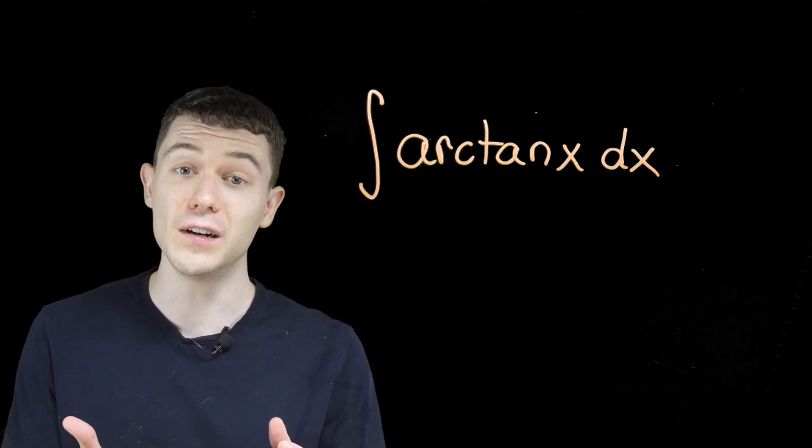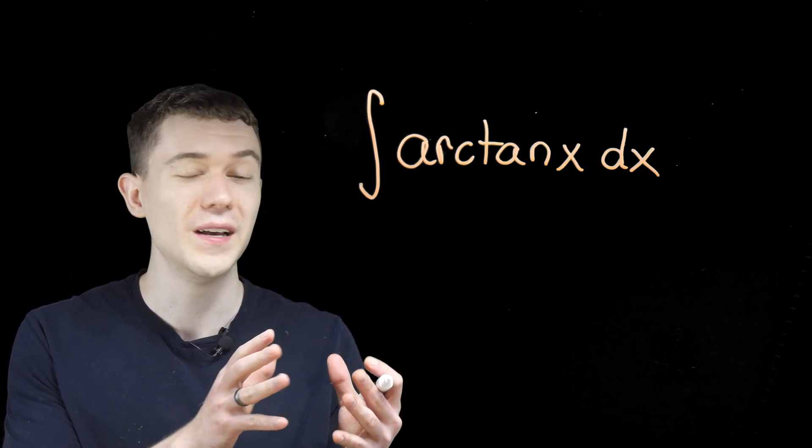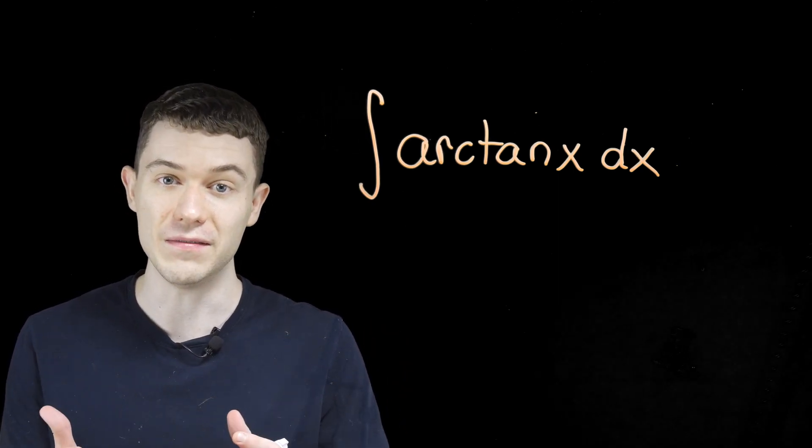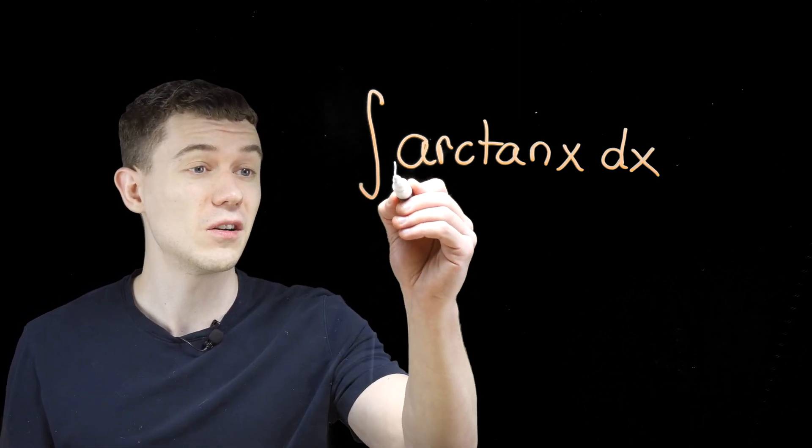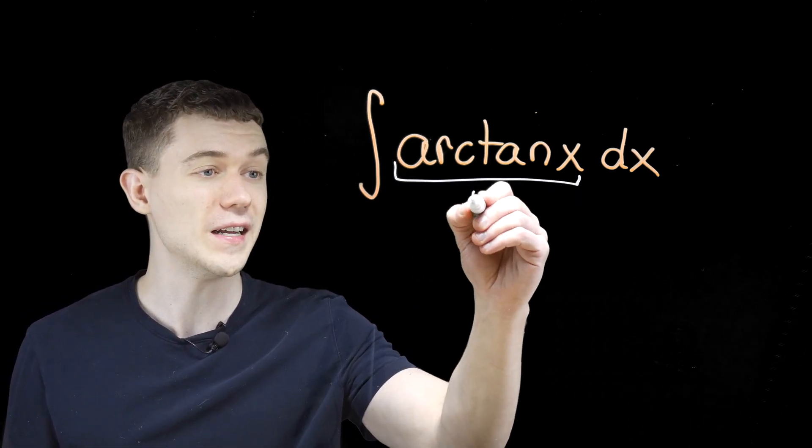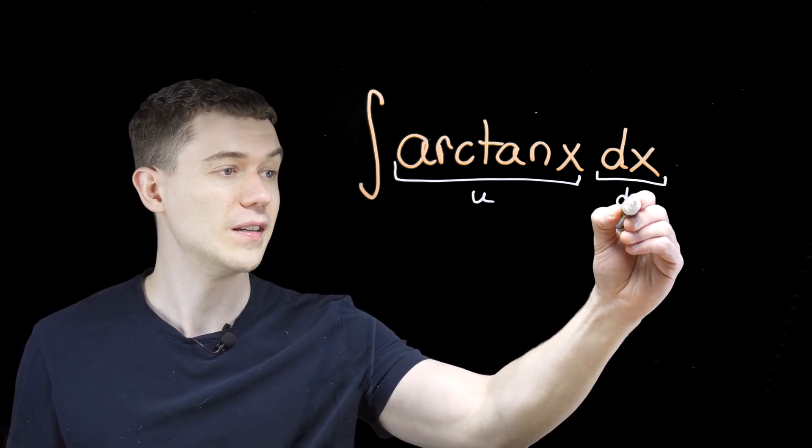That's what we'll do here. And for integration by parts, we need to select part of the integrand as u and the other part as dv, or v' if you like. Well, there's not much of a choice here. Let's just select the entire arc tangent to be our u, and that will make our dx our dv.